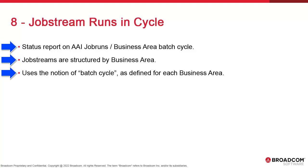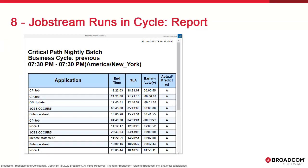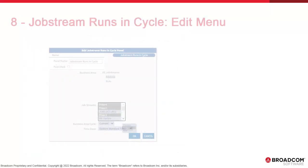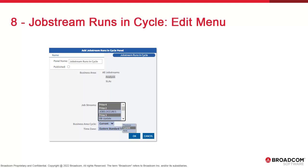It also contains SLA information. The table outputs the selected job streams for the selected business area, for the selected cycle, along with end times, SLA, on time, and overrun time, and whether it's actual or forecasted. In the edit menu, you select the business area you want to see, the job streams using the control key on your keyboard, and then the time span for the cycle — previous, current, or next.